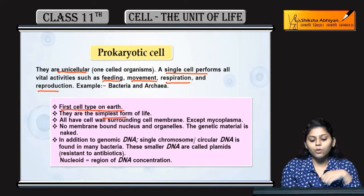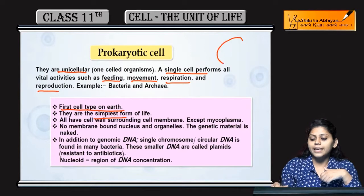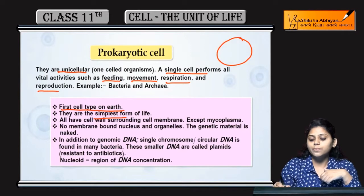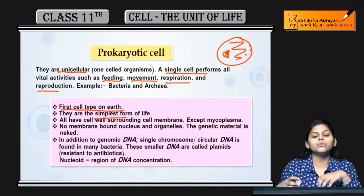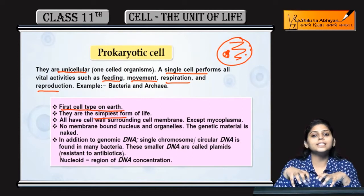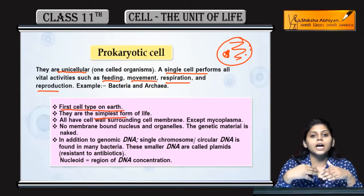Prokaryotic cell simplest form of life है. Simplest form इसलिए है क्योंकि उसमें कुछ nuclear material होगा, cytoplasm present है, ribosomes present हैं और बहुत ही कम microbodies present हैं. इससे simplest living form नहीं है.